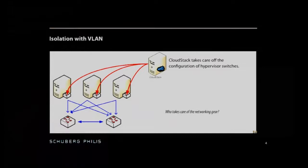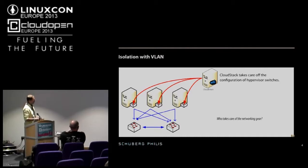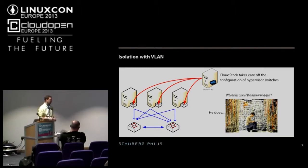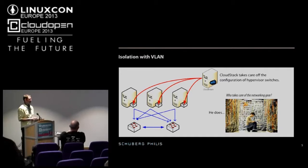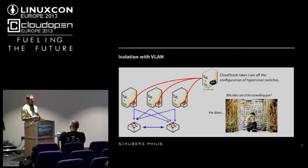So what's the problem? We have this very nice cloud orchestration system — and we're using CloudStack here as an example, but this basically goes for any type of cloud orchestration management. It can talk to your hypervisors, automatically provision stuff, and do a lot of different things. But there's also one problem: there's this guy sitting in a data center with a laptop and a USB-to-serial converter plugged into a network device, creating VLANs. Creating VLANs and configuring ports to be in a particular VLAN is a very boring job.